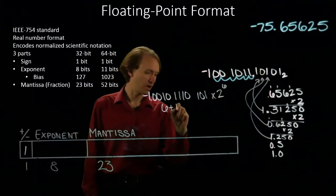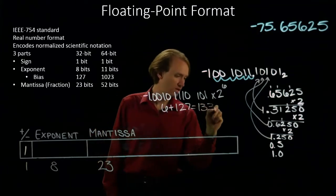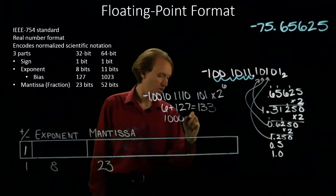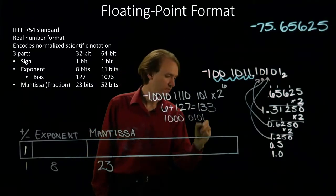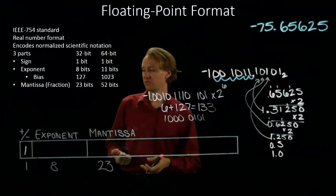I will add my bias of 127 to get 133 again. Which is still 128 plus 5. I'll copy this in for my exponent field.